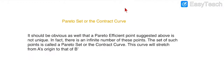The Pareto set, or contract curve, is the range in which both persons A and B will get equilibrium. A Pareto efficient point is a unique point, and there are an infinite number of such points. The set of all such points is called the Pareto set — you need to remember that the set of points between the two persons in the Edgeworth box is called the Pareto set or the contract curve.